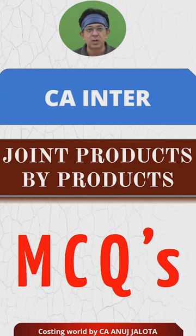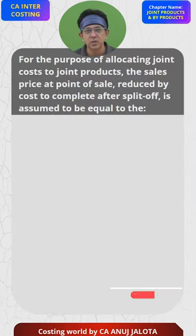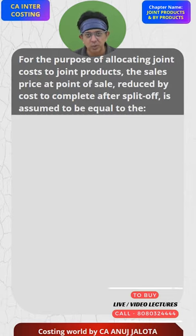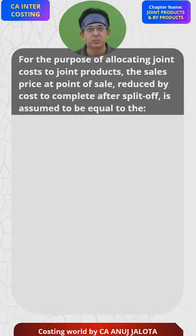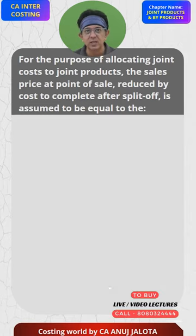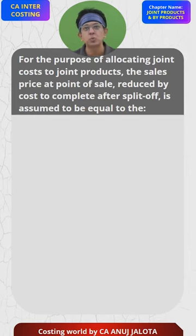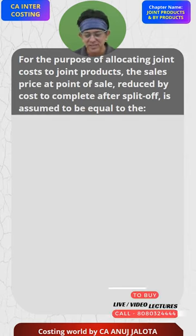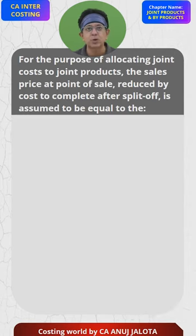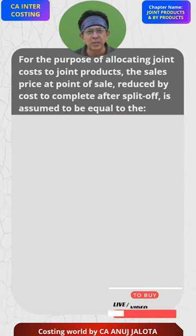I enter joint products by products MCQs. For the purpose of allocating joint cost to the joint products, the sale price at the point of sale reduced by cost to complete after the split-off point. Those guys are saying if you want to apportion joint cost and you take sales price at the point of sale, reduce it by the cost to complete the product after the split-off point — that means the further processing cost.